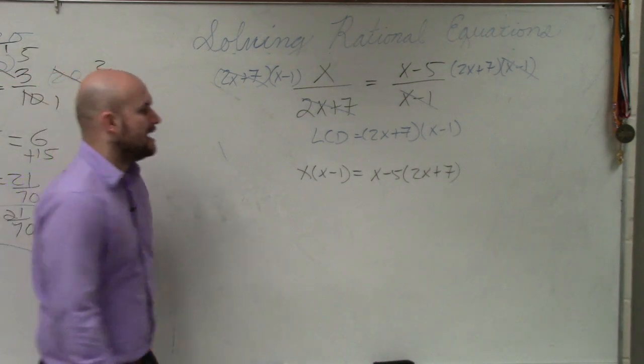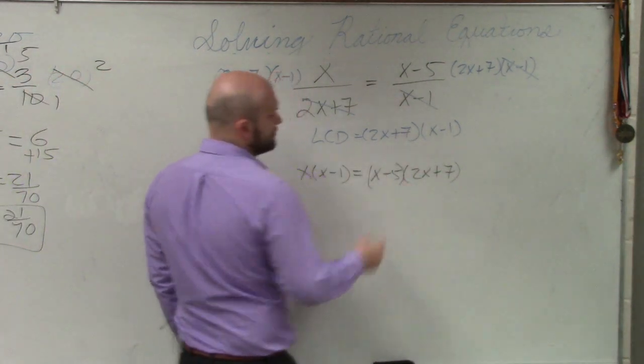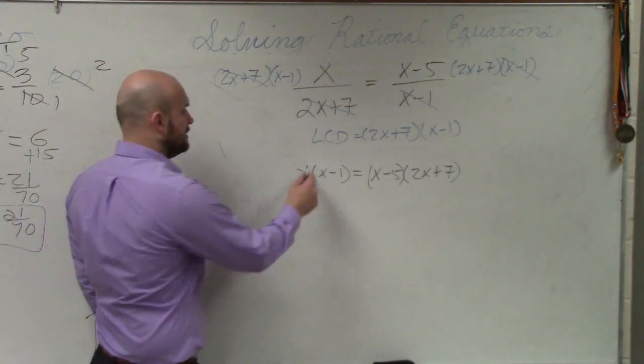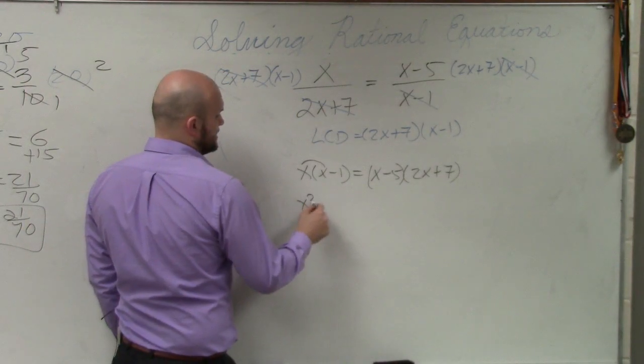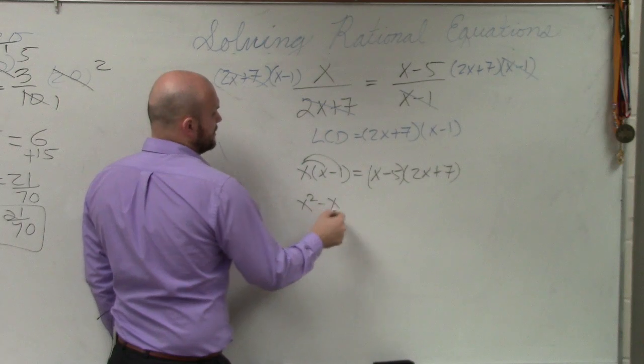OK, now what we do is apply distributive property. Over here, x times x is x squared. x times negative 1 is negative x.